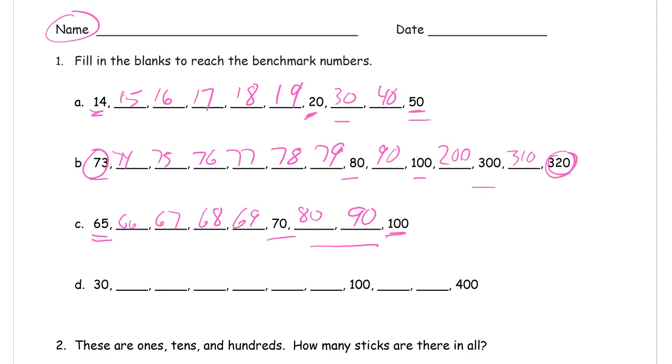This is just how to count up. We're starting at a 10 here, 30. So it looks like we're counting by tens to get to 100, and then we're counting by hundreds to get to 400. So it's going to be 40, 50, 60, 70, 80, 90, 100, 200, 300, 400.